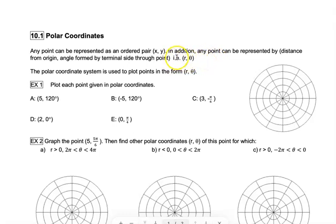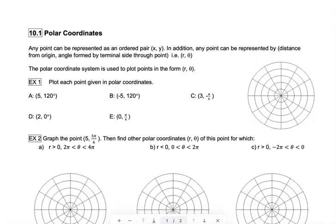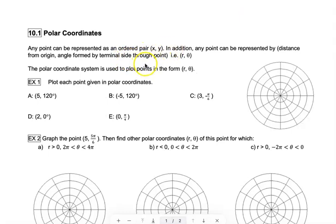Today we are going to start talking about polar coordinates. The coordinates you are used to are called rectangular coordinates — your X and Y ordered pair. Polar coordinates are based upon the idea that we can also represent a point by its distance from the origin and the angle formed by the terminal side through the point. So in polar coordinates, instead of X comma Y, we have R comma theta, where R is the radius (the distance from the origin) and theta is the angle in standard position.